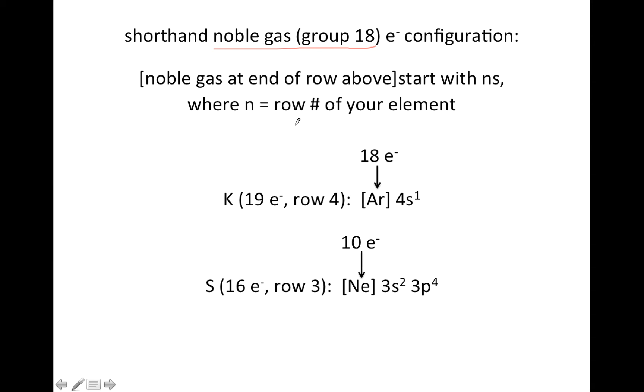It's called the shorthand noble gas electron configuration. Noble gases are column 18 or group 18 on the periodic table. So the general strategy would be, you go up one row from where your element is, and you go all the way to the right.